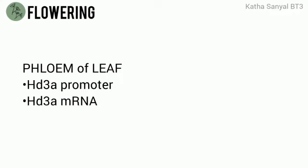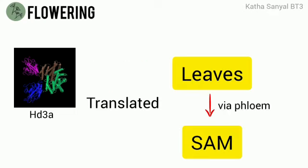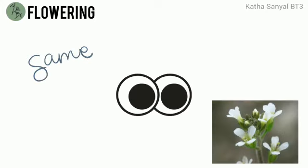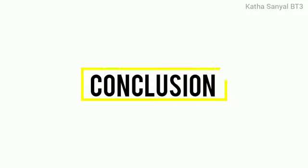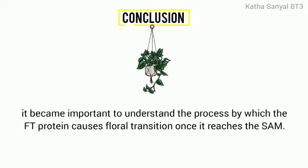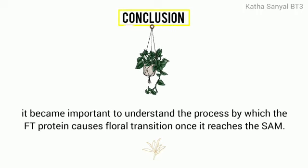However, the HD3A protein is found in neither of these places but instead accumulates in the SAM, which shows that HD3A protein is first translated in leaves and then transported to the SAM via the phloem where floral transition is initiated. The same results occurred when looking at Arabidopsis. These results conclude that FT or HD3A is the florigen signal that induces floral transition in plants. Upon this conclusion, it became important to understand the process by which the FT protein causes floral transition once it reaches the shoot apical meristem.